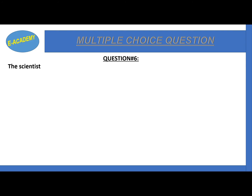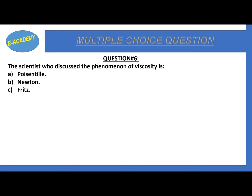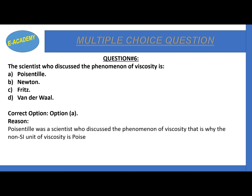Question 6. The scientist who discussed the phenomenon of viscosity is: Poiseuille, Newton, Fritz, or van der Waals. The correct option is option A: Poiseuille. This is why the unit of viscosity is the poise — Poiseuille was the scientist who discussed the phenomenon of viscosity.